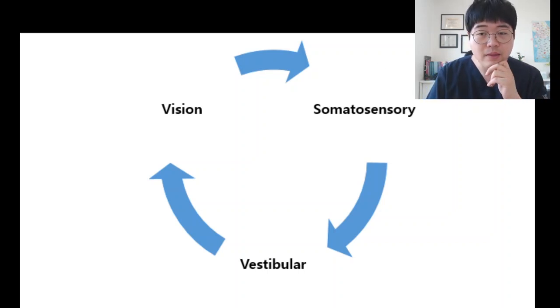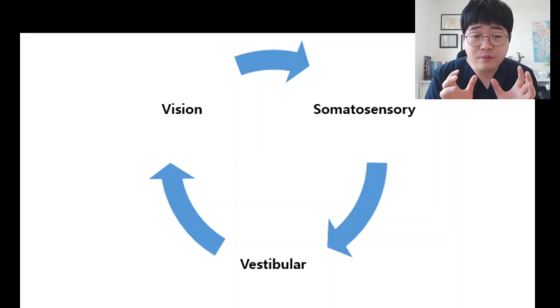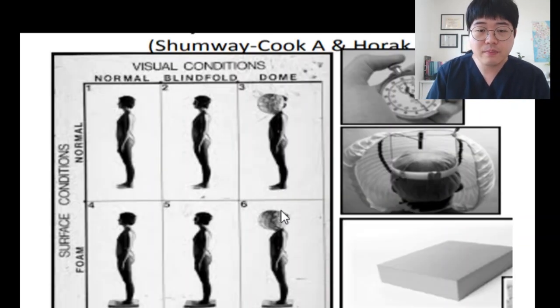Third, there are somatosensories. What about somatosensory? Somatosensory is the sense of body. It contains mechanical sensory. Especially for balance, it's proprioceptors on feet. So there are three senses to make the balance.